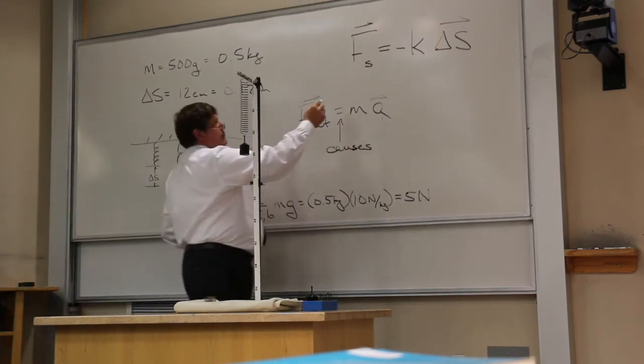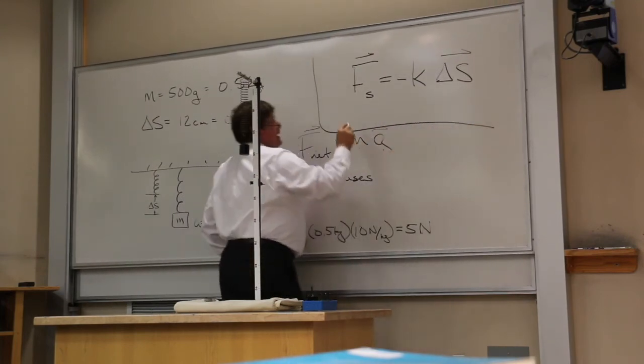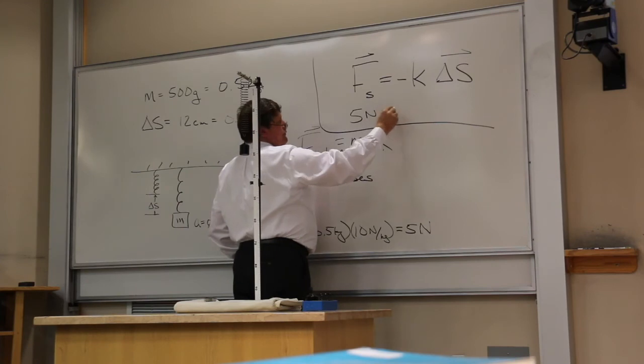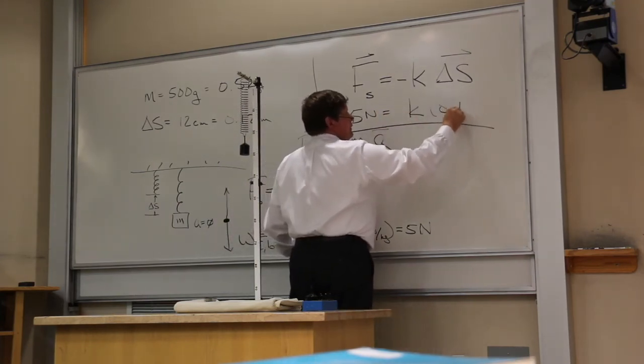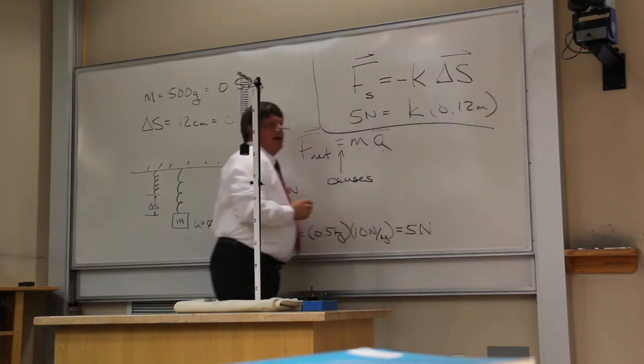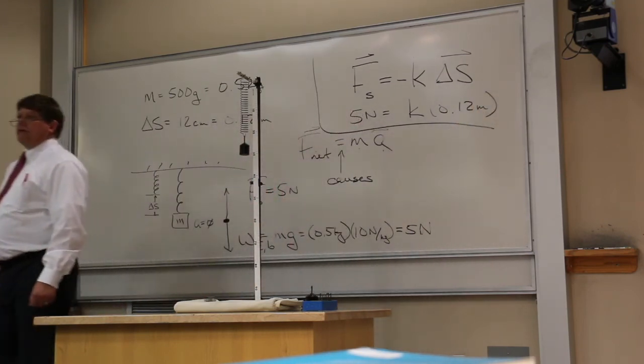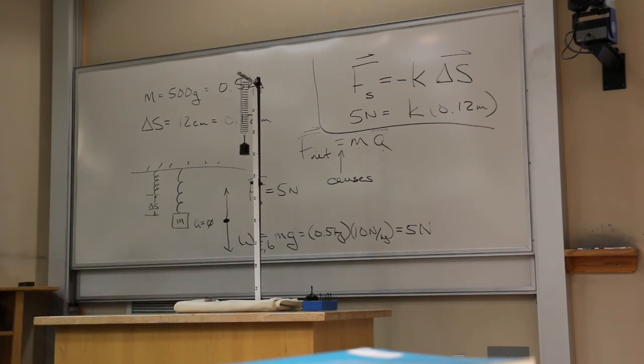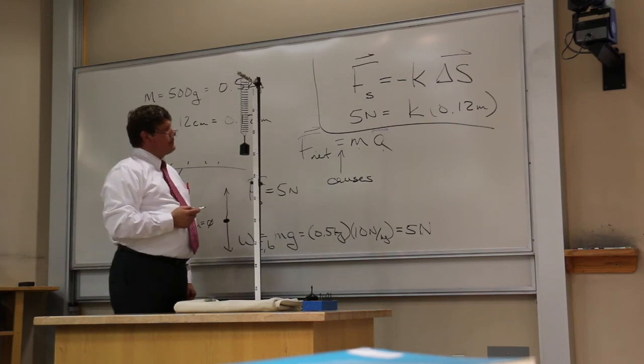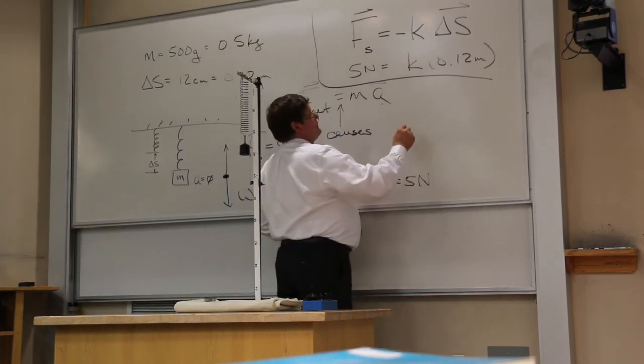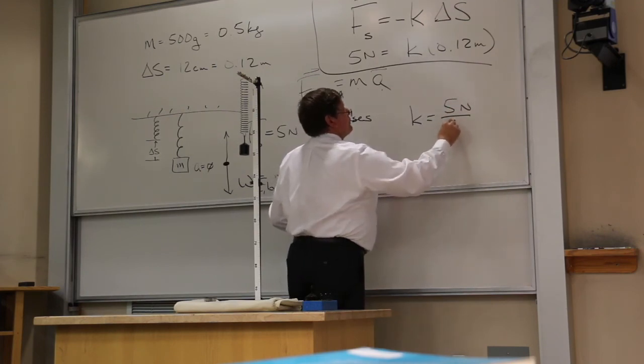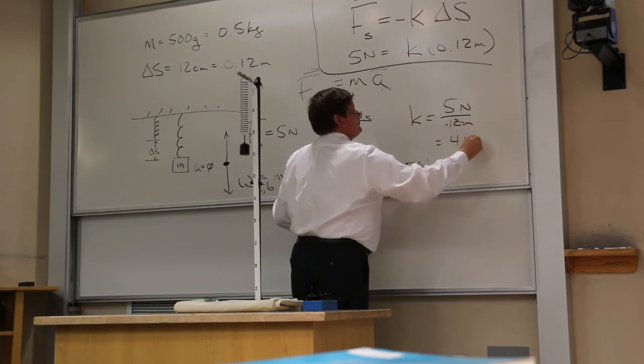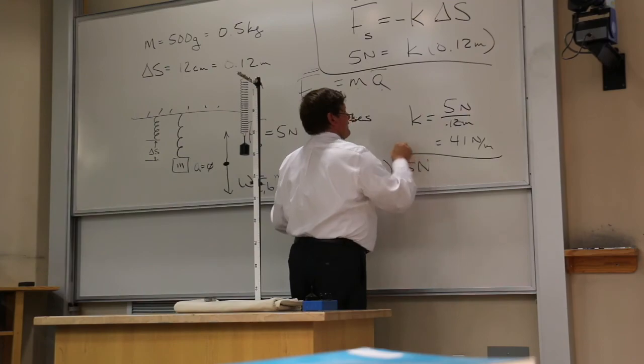Now, if I go up here to Hooke's Law and I plug in five newtons and I plug in 0.12 meters and I forget about the minus sign because that just gives me direction. I'm just looking for the size of K. K is always going to be a positive number. That's going to give me a K value of five newtons divided by 0.12 meters. And that's going to be 41 newtons per meter.